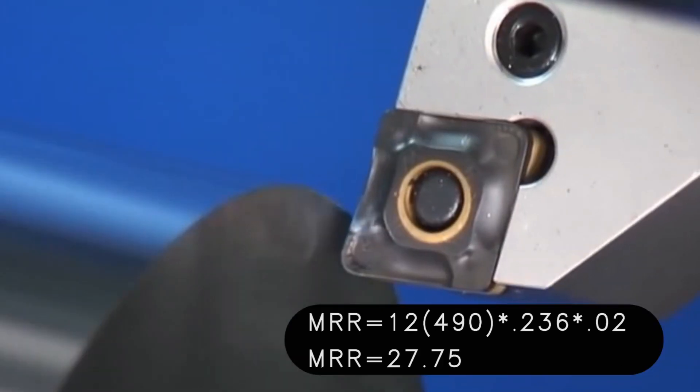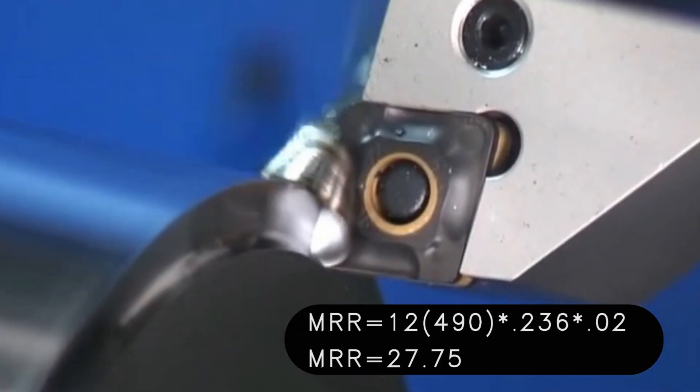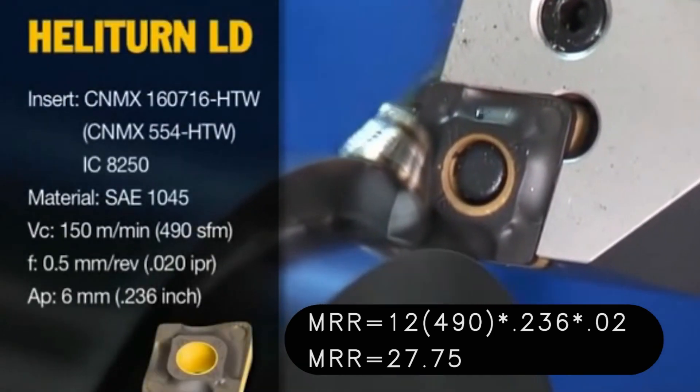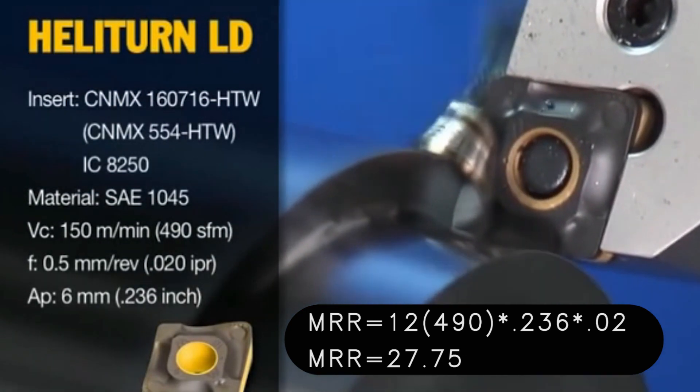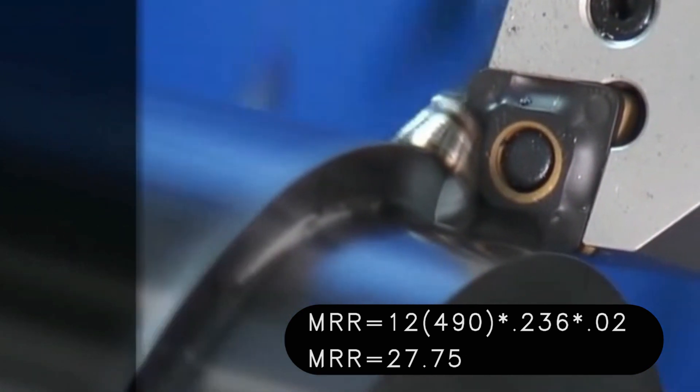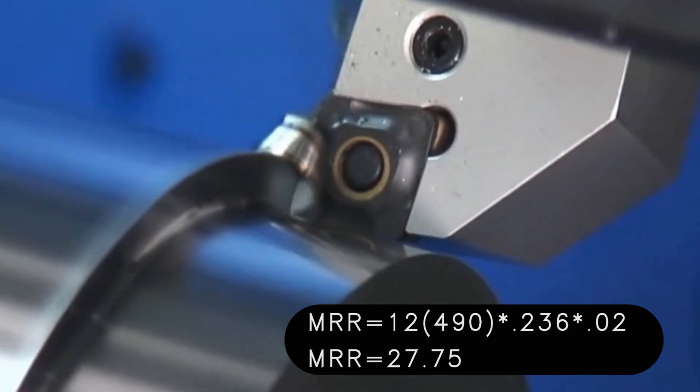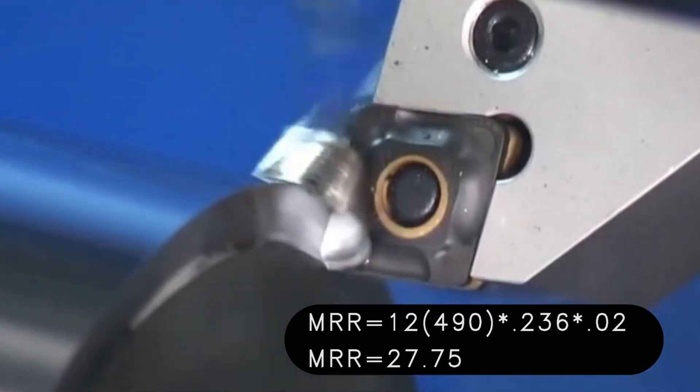Now here on this one we've got a metal removal rate of 27.75, and this is more of your standard type roughing tool, kind of like a CNMG, although this is a little bit different and it's doing a pretty good rate right there.